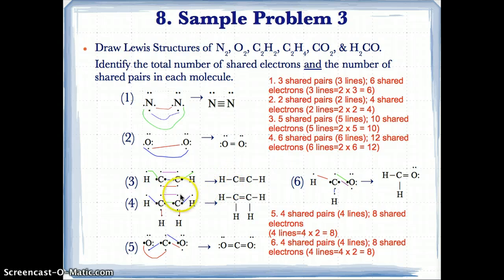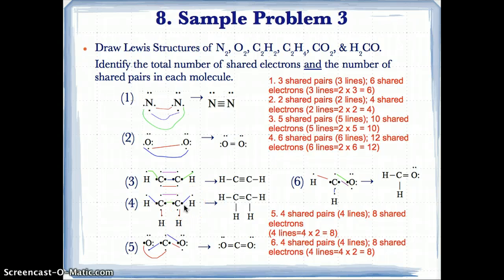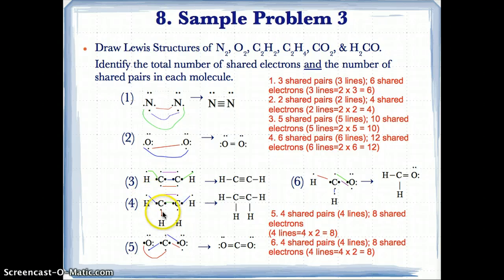For C2H4, we have four unpaired electrons on each C at north, east, south, and west, and one unpaired electron on each H at north. We pair the single electron at west on the left C with the north on one H, and at south on the same C with the north on another H. The same is done for the right C — east bonds with one H and south bonds with another H.